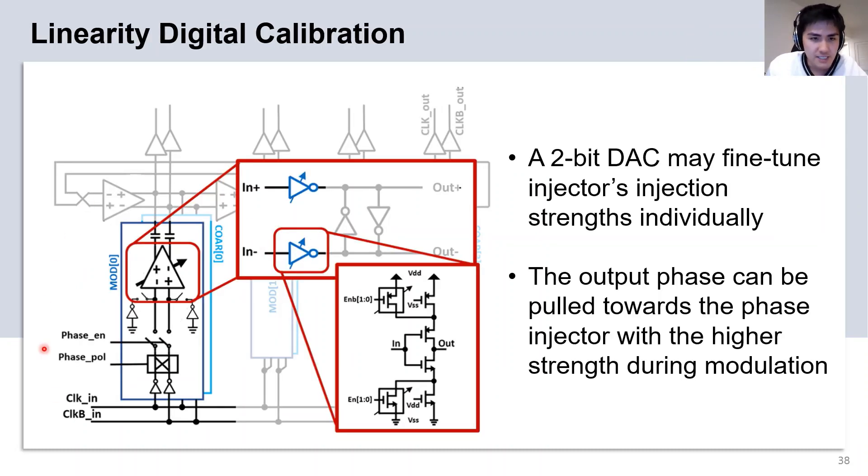As mentioned earlier, each phase injector is implemented with the tunable inverter buffer as shown here. These buffers are designed with source-degenerated transistors, along with a two-bit DAC, which controls the current flowing through the output of the inverter to adjust the injection strength of the clock going into the ring oscillator. Each injector can be individually controlled to fine-tune their injection strength.